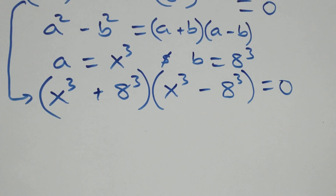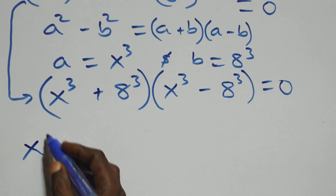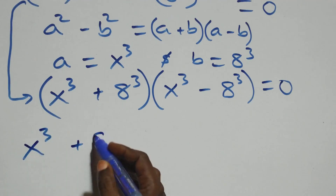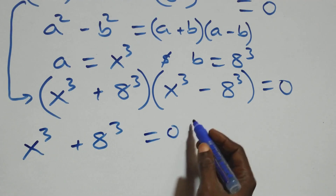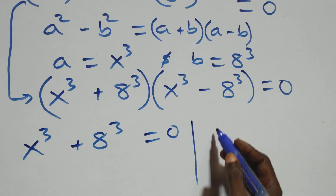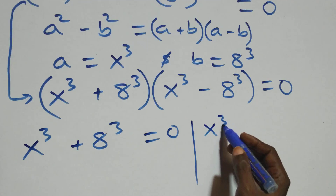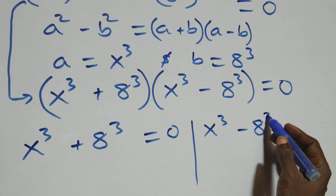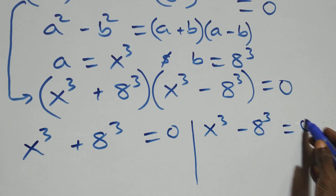Then we have two possible cases. The first one: x raised to the power 3 plus 8 raised to the power 3 equals to 0. Or we have x raised to the power 3 minus 8 raised to the power 3 equals to 0.